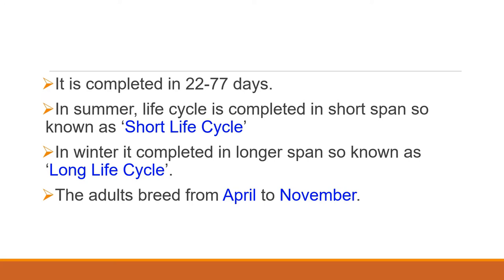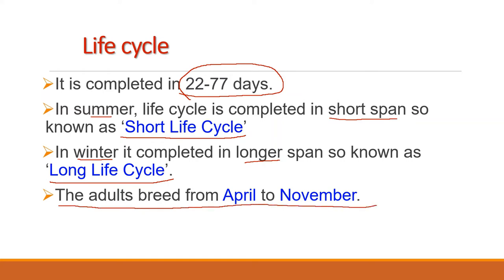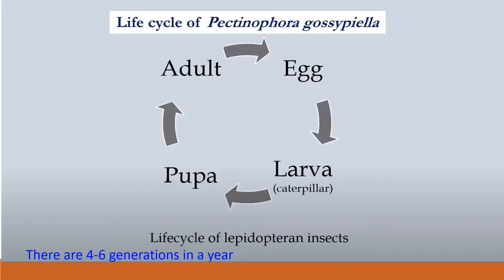The life cycle of Pectinophora gossypiella is completed in 20 to 77 days. In summers, the life cycle is completed in a short span, and in winters in a longer span. The adults breed from April to November. Like other Lepidopterans, the life cycle is completed in four stages: egg, larva (caterpillar), pupa, and adult.